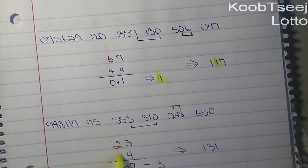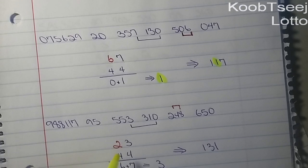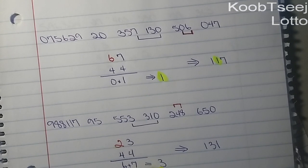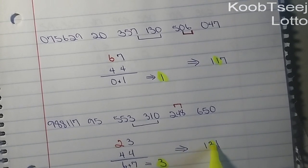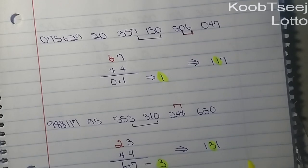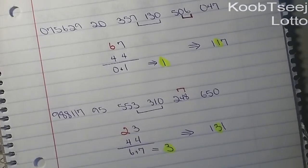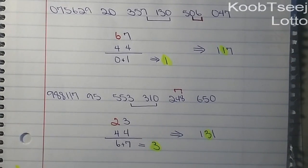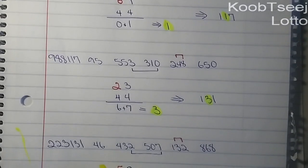Right here, 4 plus 8 is 12, so take the 2. Three plus zero is 3. Now put 44, add it up: 3 plus 4 is 7, 2 plus 4 is 6. When we add it up, we get 650, 13.